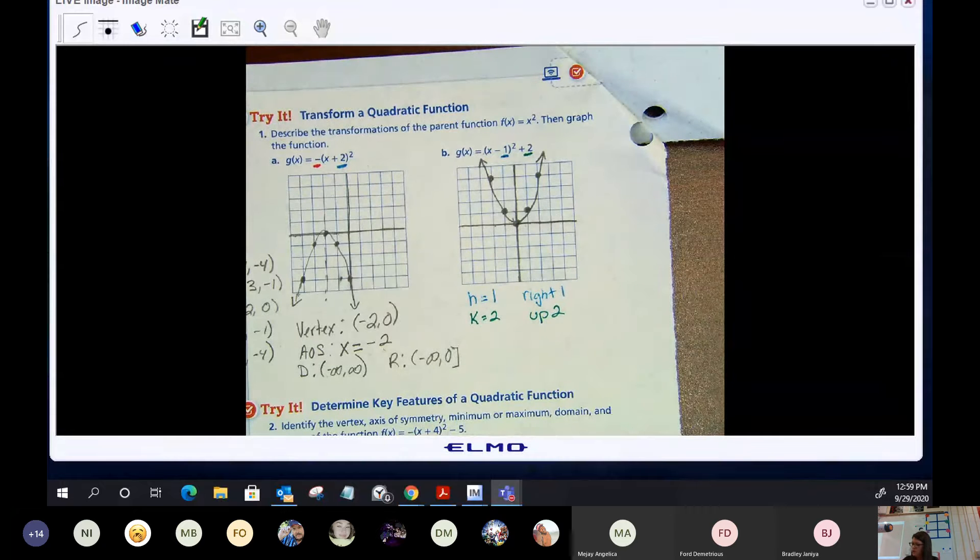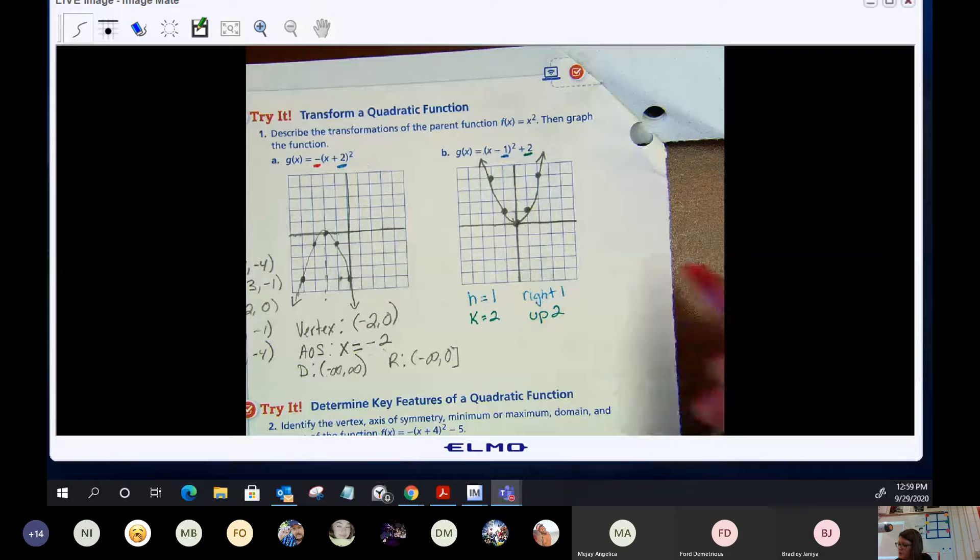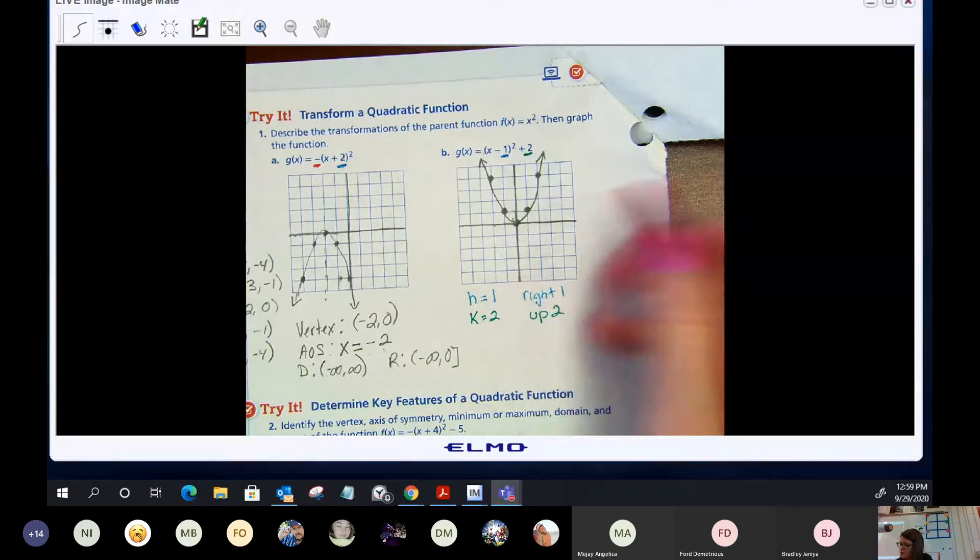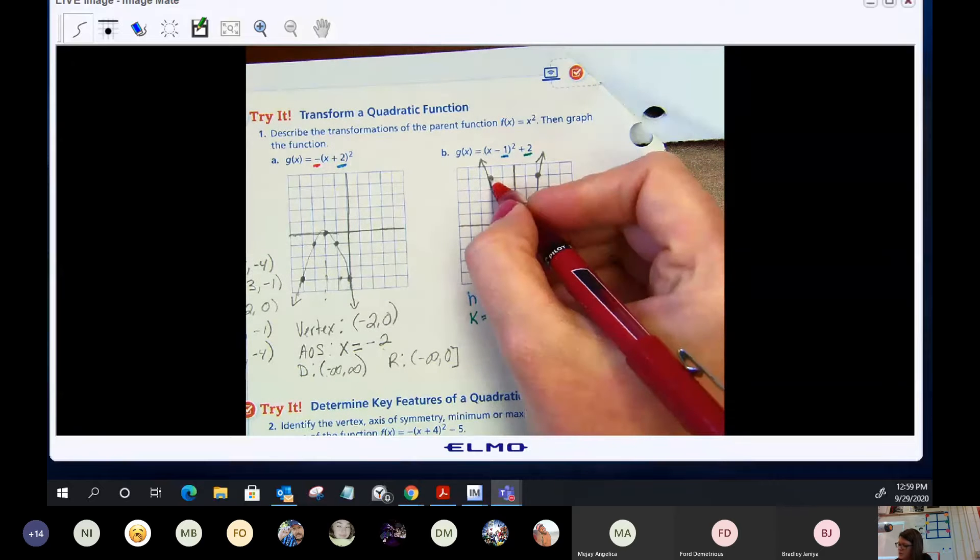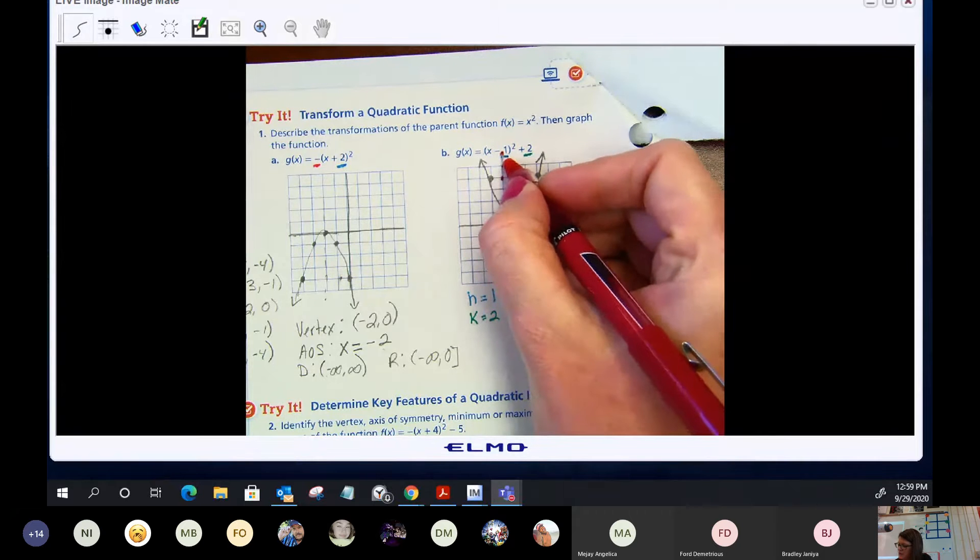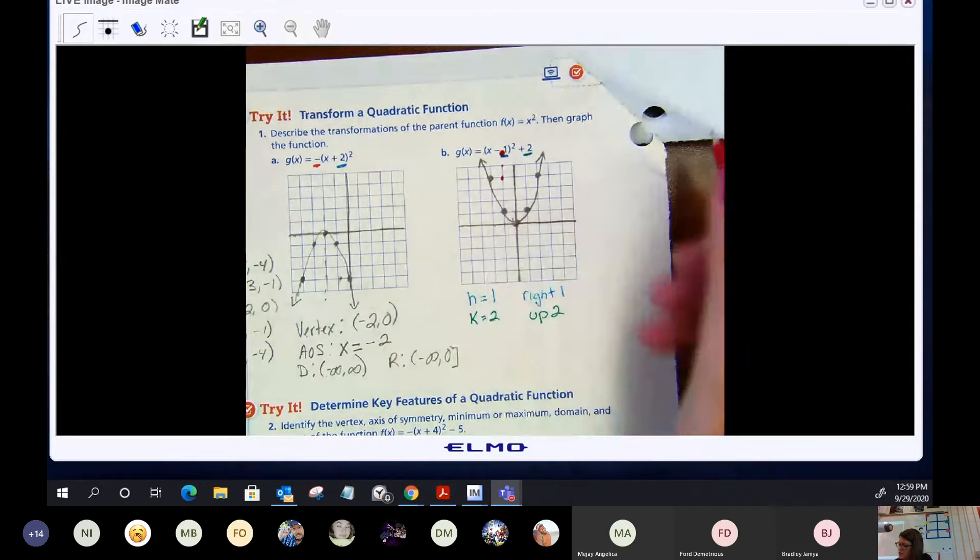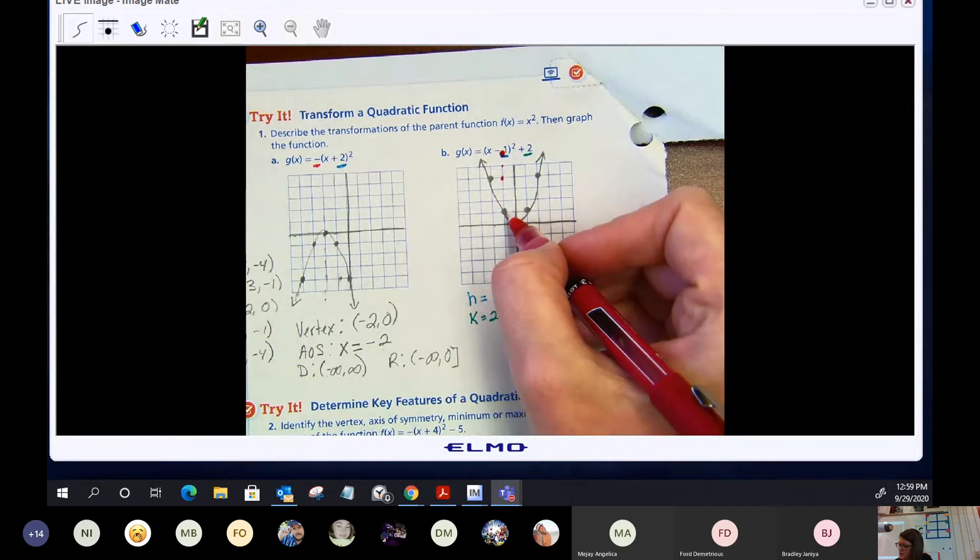So literally, I'll just grab my red pen. We're going to go to each of these points on the parent graph, we're going to go right one, up two. So take this one, we go right one, up two, one, two. I'm off the graph, it'll be okay, it's right about there. So again, take the next point, right one, up two, one, two.